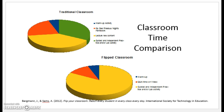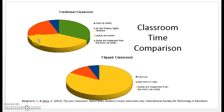This is essentially a graph from Bergman and Sims that I completed, comparing classroom time. A traditional classroom has a warm-up, a review of last night's homework, then new material and lecture, followed by guided practice and independent practice. This is very traditional — what we've been doing in education for decades.